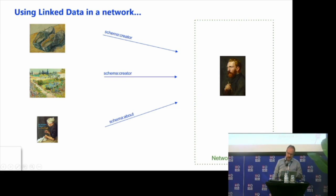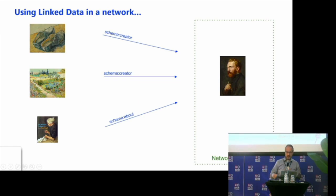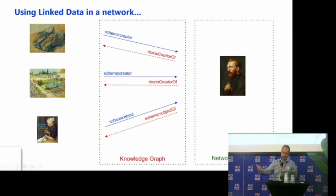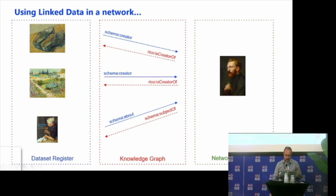All these entities on the left are linking to one entity, the concept Van Gogh. And it's really important to find those concepts in vocabularies or thesauri. That's where the network of terms comes into play. With it, we want to build a knowledge graph. Where can we find works from this artist? And where can we find this data? That's where the dataset register, which I presented this morning, comes into play.